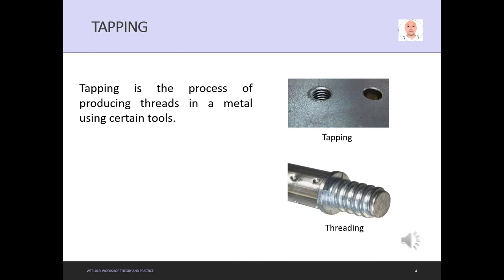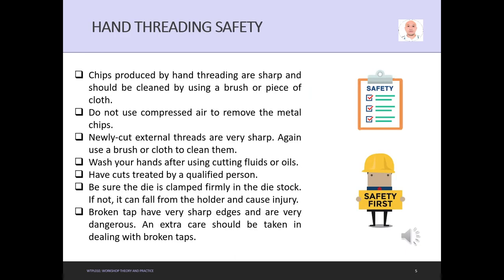Hand threading safety: Number one, chips produced by hand threading are sharp and should be cleaned by using a brush or piece of cloth. Do not use compressed air to remove metal chips. Newly cut external threads are very sharp, so use a brush or cloth to clean them. Wash your hands after using cutting fluids or oil. Ensure the die is clamped firmly in the die stock. Broken taps have very sharp edges and are very dangerous, so extra care should be taken.